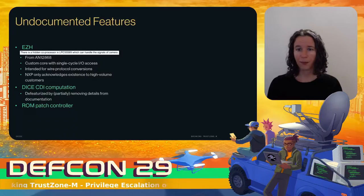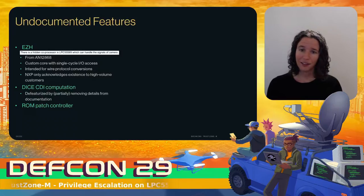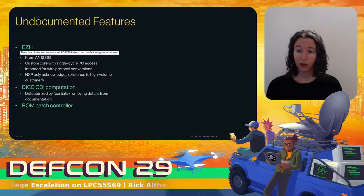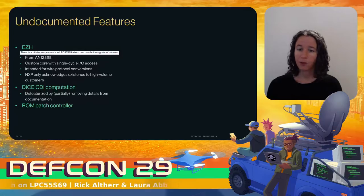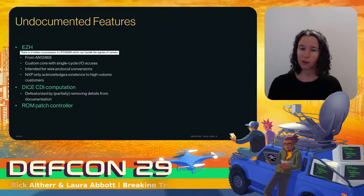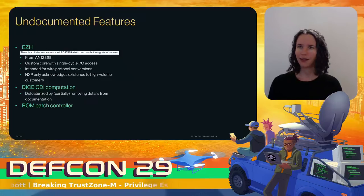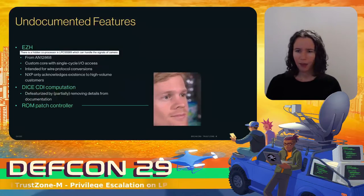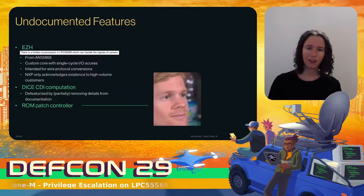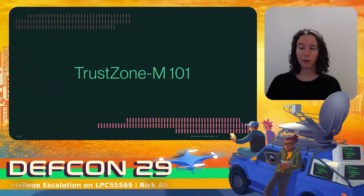We did eventually find out that this core is named EZH — it's a custom core with a custom instruction set architecture, really designed to offload wire protocol conversions that don't need to run on the main ARM processor. The documentation also contained a passing reference to DICE-CDI — Device Identifier Composition Engine and Compound Device Identifier — a feature from the trusted computing group designed to give a cryptographically strong identity to the chip based on the first mutable code. Unfortunately NXP decided to defuturize this by removing detailed documentation. The feature is still actually there in hardware, you just can't know anything about it. And then there's the ROM patcher, but before we go into that, it helps to have an understanding of TrustZone M.